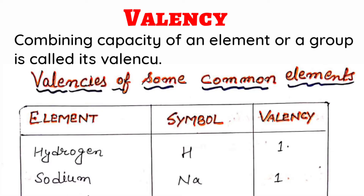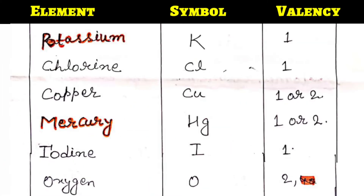Valency of some common elements — see here in this chart. The first element is hydrogen, symbol H, valency 1. Sodium symbol Na, valency 1. Potassium symbol K, valency 1. Chlorine Cl, valency 1. Copper symbol Cu, valency 1 or 2. Some elements have variable valency — they use it according to the situation. Mercury symbol Hg, valency 1 or 2 — also variable valency. Iodine symbol I, valency 1.